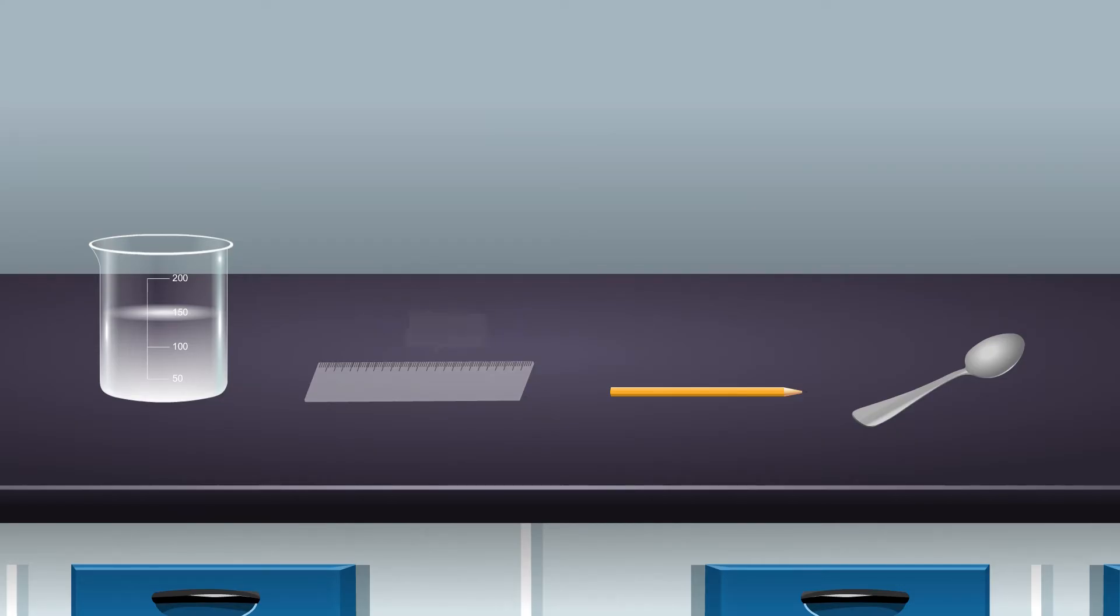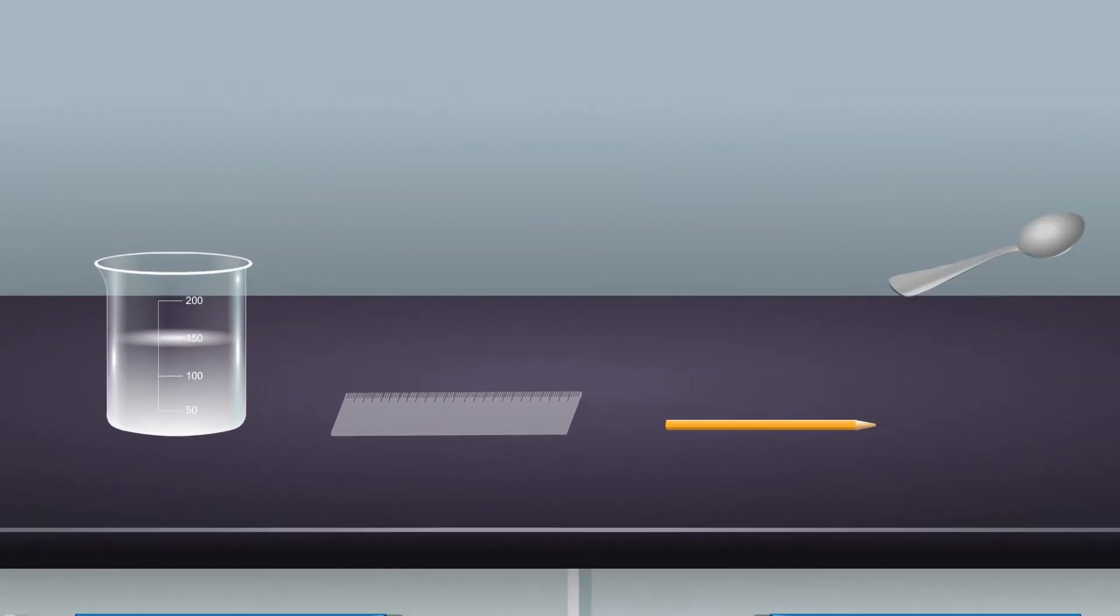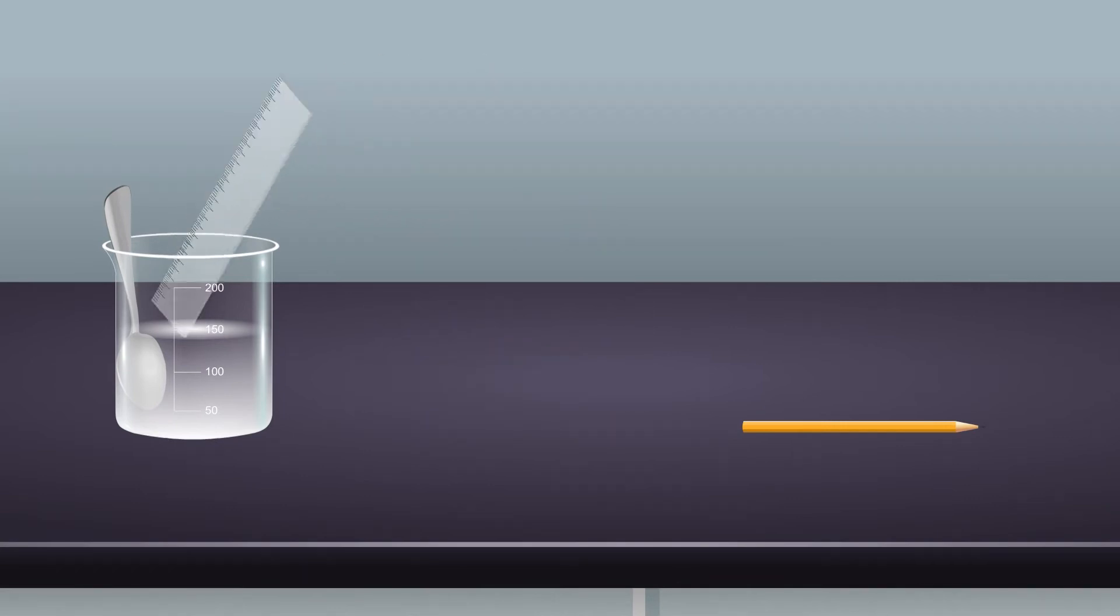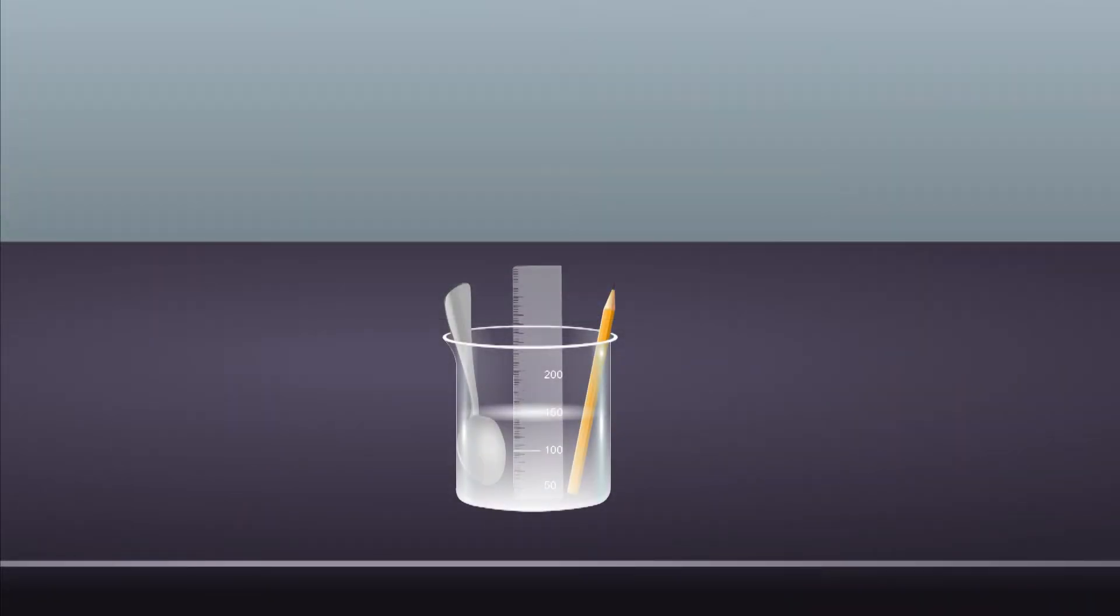Procedure: Take the beaker half-filled with hot water. Dip one end of the metal spoon, plastic scale, and wooden pencil into the beaker. After two minutes, touch the other exposed ends of the objects one by one.